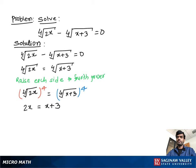Now we subtract x from both sides. So we get 2x minus x equals 3, which gives us x equals 3. So x equal to 3 is the solution.